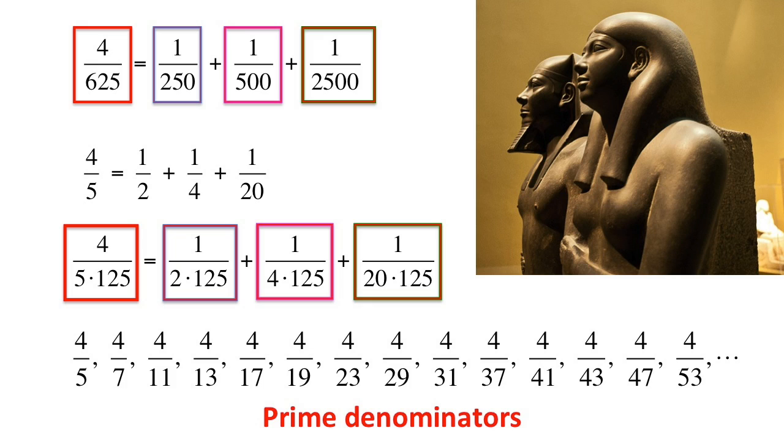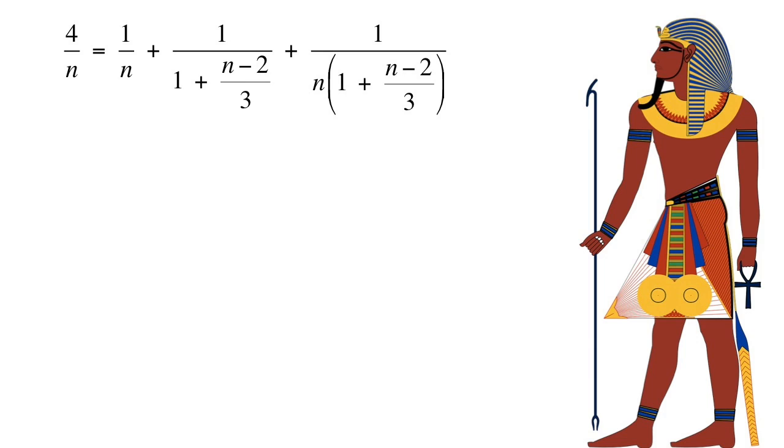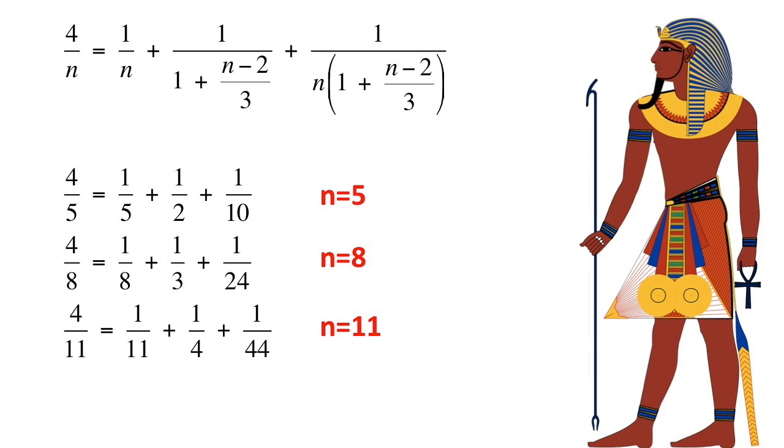In an effort to show that a large swath of numbers fulfill the Erdős-Strauss conjecture, some special formulas, like this one, help. If n equals five, eight, eleven, fourteen, seventeen, and so on, numbers which when divided by three have a remainder of two, this formula produces an Egyptian fraction with three terms.